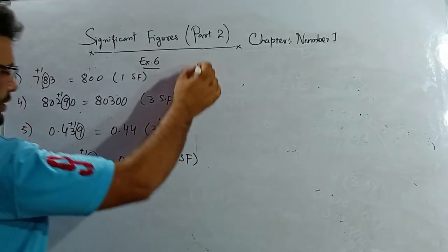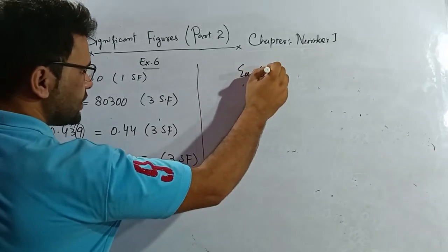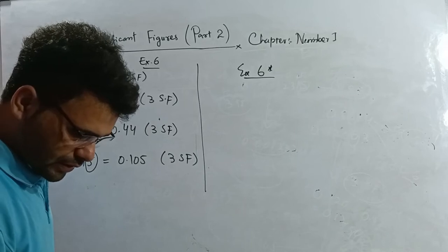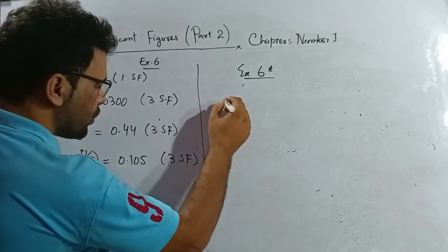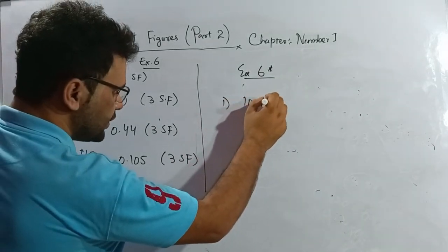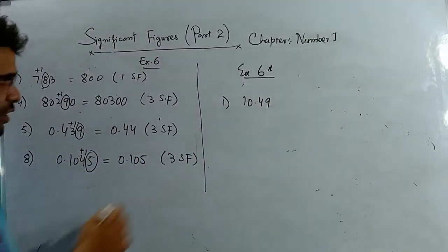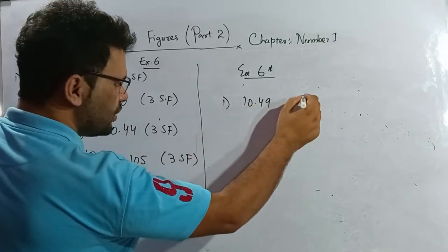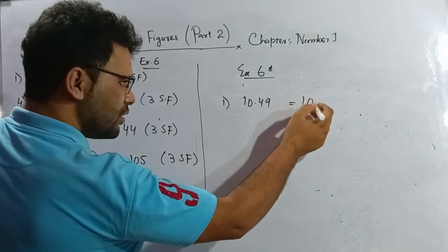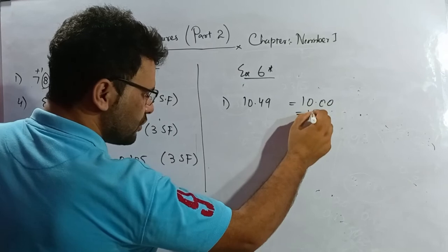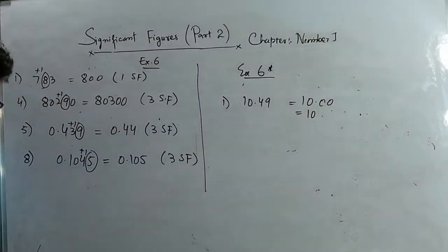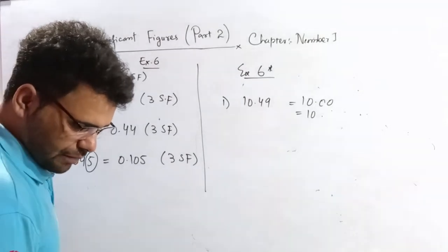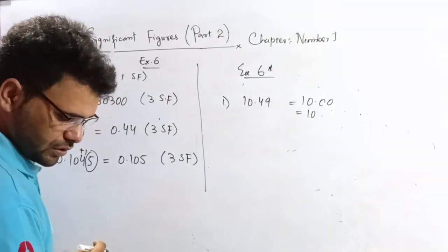Now looking at exercise 6 star. Question number 1: 10.49, write correct to one significant figure. I check the second significant figure — it is zero, so no rounding up. The answer is 10.